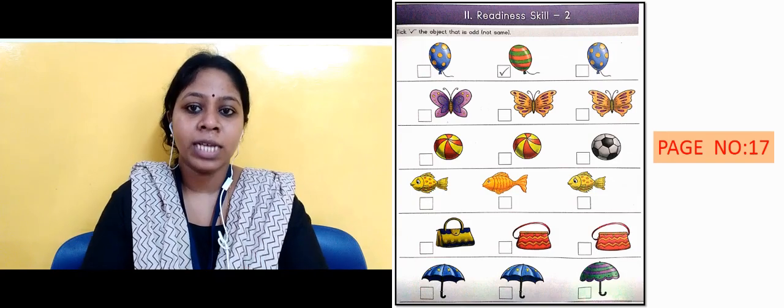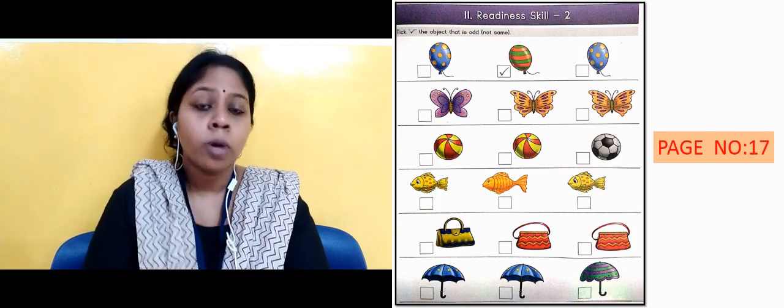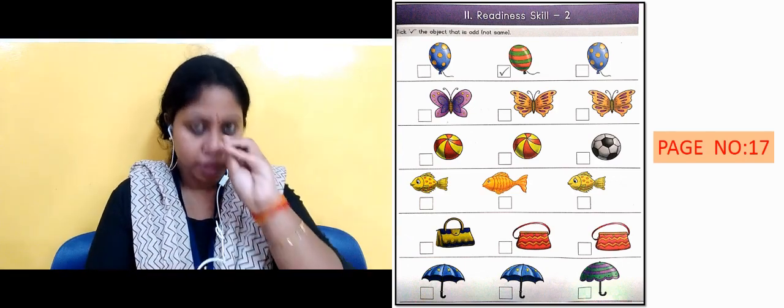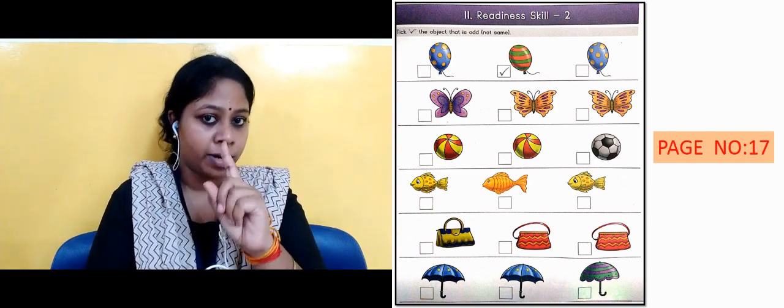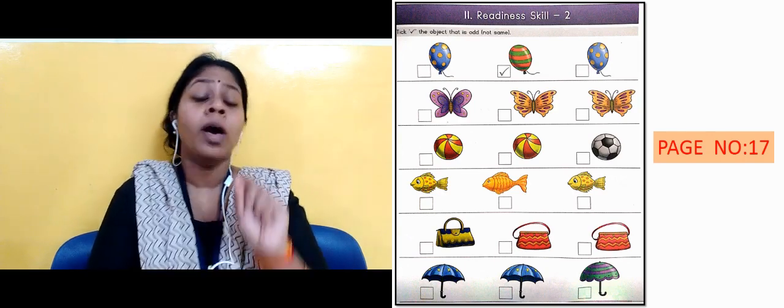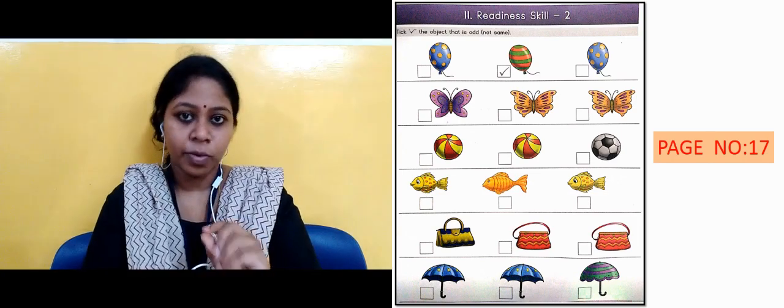The next slide you can see it's written page number 17 and the topic name is readiness skill 2. What was in it? You have to tick the object, tick the image which is different. The image that is different from the other two images, you have to identify and tick that image. So now you will revise this exercise.